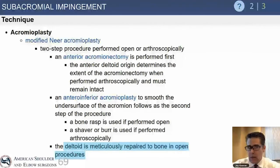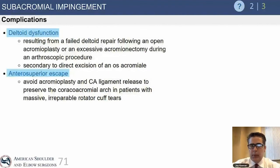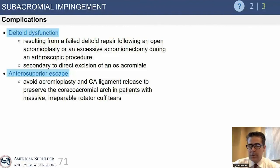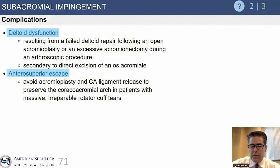Acromioplasty can be performed either arthroscopically or open, with no clear advantage of one over the other, though most surgeons now do it arthroscopically as it creates less early pain and stiffness. Complications of open acromioplasty or failed open cuff repair include deltoid dysfunction — where inadequate repair can cause the deltoid to pull off the acromion — and anterosuperior escape, a combination of cuff deficiency, coracoacromial arch deficiency, and anterior deltoid deficiency causing the humerus to escape anteriorly. This is now rarely seen since most repairs are performed arthroscopically, and true escape requires some element of deltoid dehiscence.